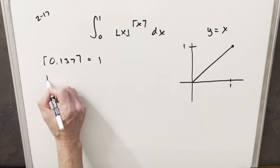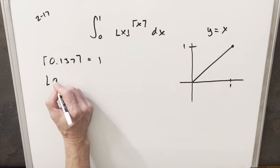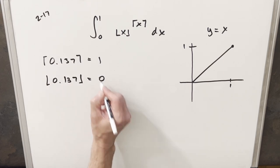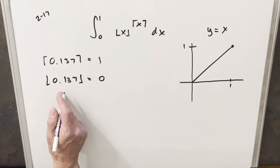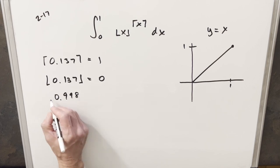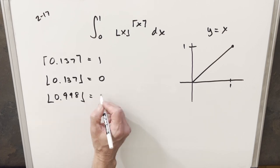For the floor function, the floor of 0.137 will round me down to 0. For any value in this range, even if we did 0.9998, the floor will still take me down to 0.